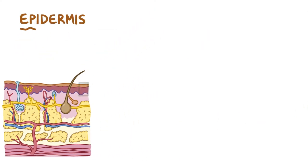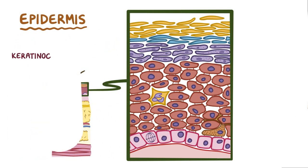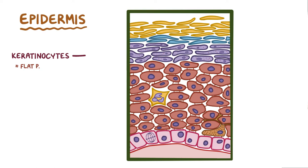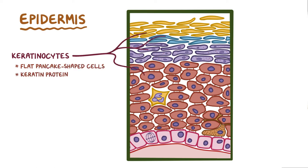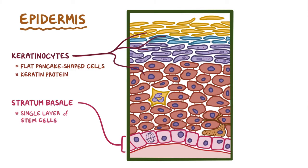The epidermis itself is made of multiple layers of developing keratinocytes, which are flat, pancake-shaped cells named for the keratin protein that they're filled with. Keratinocytes start their life at the lowest layer of the epidermis, called the stratum basale, or basal layer, which is made of a single layer of stem cells called basal cells.